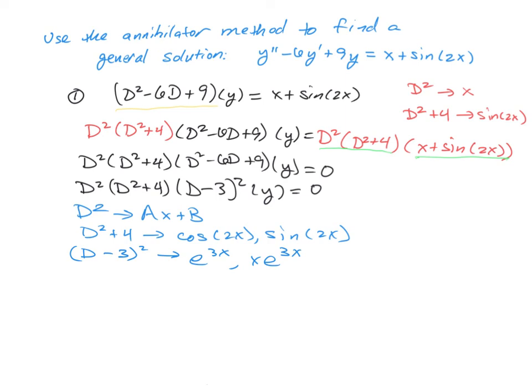So our solution then is going to be a linear combination of all of these terms. We're going to have our y of x being c1 e to the 3x plus c2 x e to the 3x, and then we're going to have our linear ax plus b.